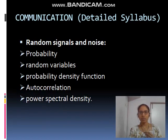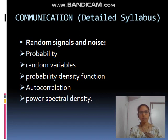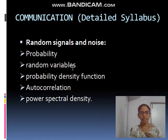The communication syllabus is basically divided into three main topics: random signals and noise, analog communication, and digital communication. In random signals and noise, we will be having topics related to probability, random variables, probability density function, autocorrelation, and power spectral density.